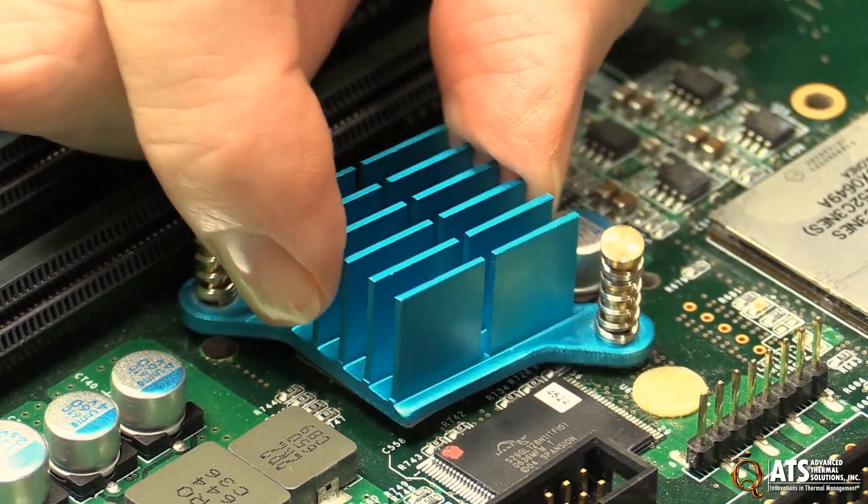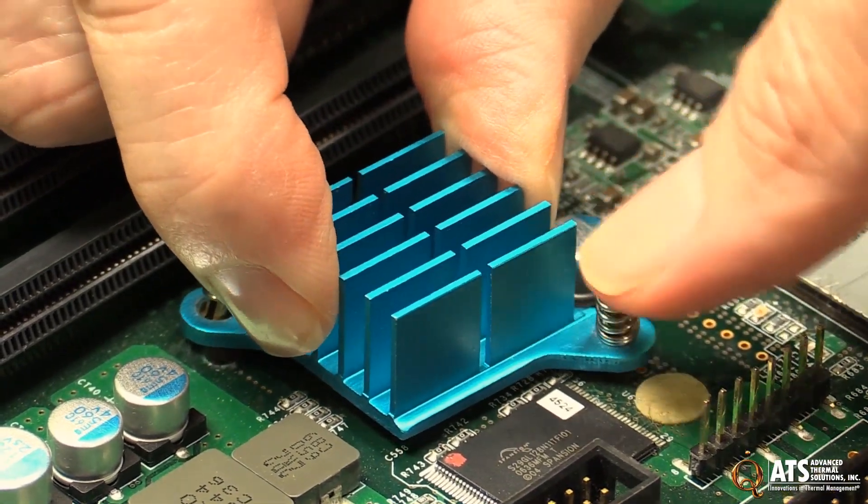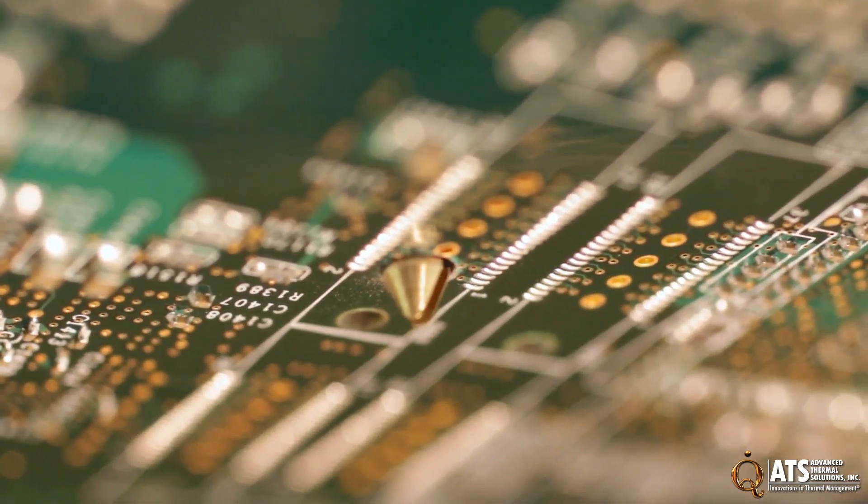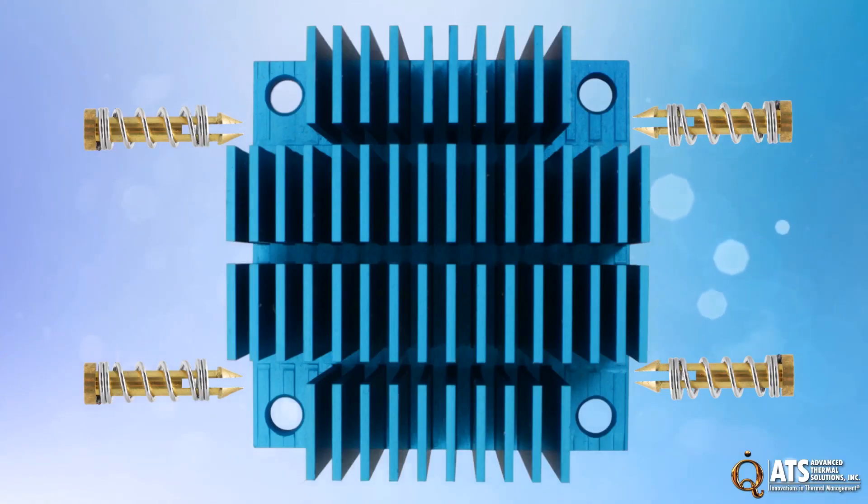Align the heatsink with the holes in the board. With one hand on the heatsink for stability, press the pins through the board one at a time with your other hand. If using more than two pushpins, install the pins in a criss-cross orientation.